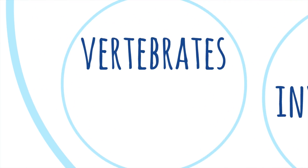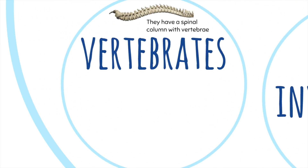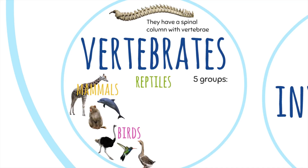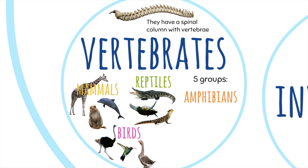Vertebrates have a spinal column or a backbone with vertebrae, and they are divided into five groups: mammals, birds, reptiles, amphibians, and fish.